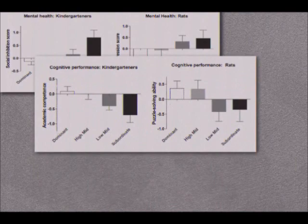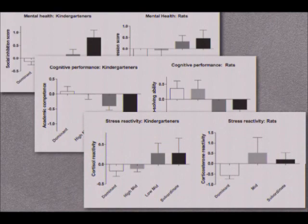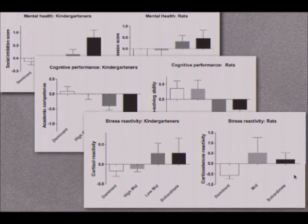With regard to cognitive performance, subordinate children had lower levels of cognitive performance as kindergartners, and subordinate rats had a cognitive deficit in a problem-solving puzzle. With regard to stress reactivity, subordinate children had higher levels of cortisol reactivity in the lab, and subordinate rats had higher levels of corticosterone reactivity. There was some variability, but the consistency across the two species was what we felt was important.